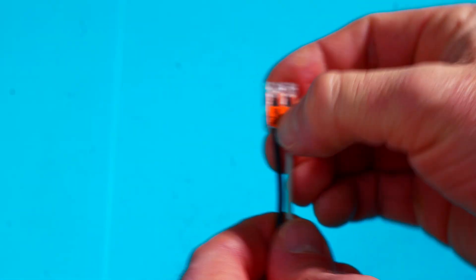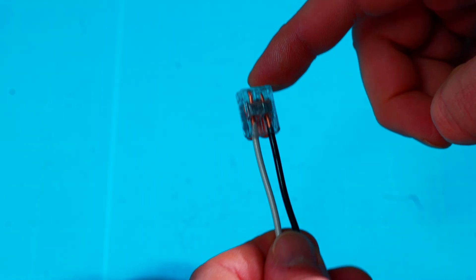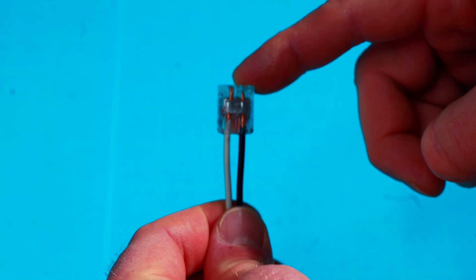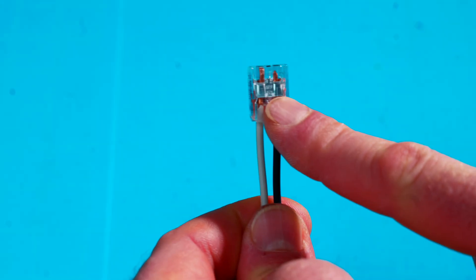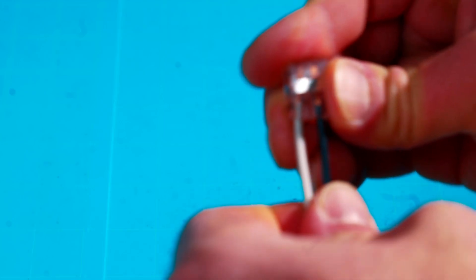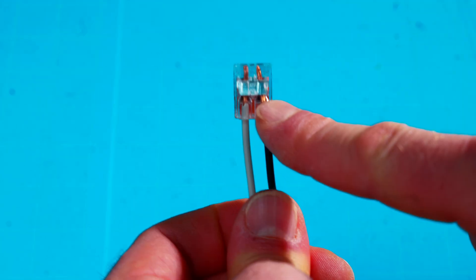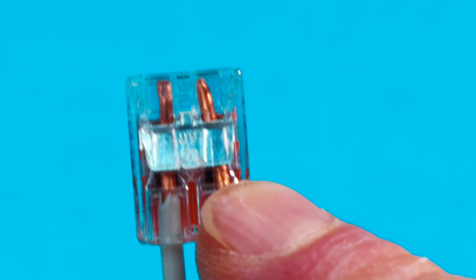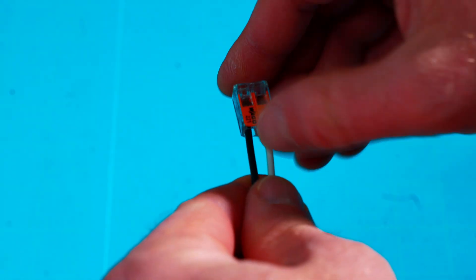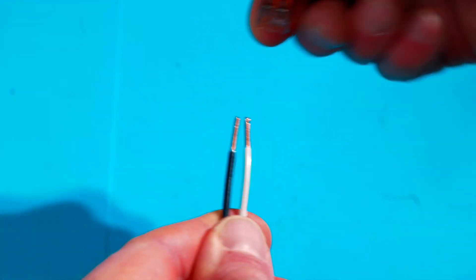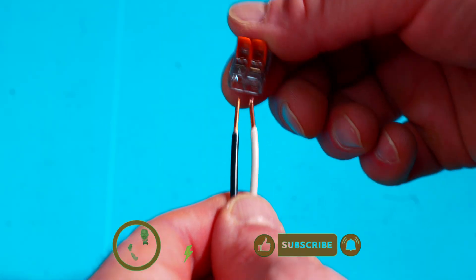Another great thing about these Wago 221s is as you can see, they are see-through. So if you're looking at the back, you can see where your wires have ended up. If you don't like the way they've landed inside your barrels or inside the connector, you can simply pop the orange levers back up and start again, and it's that quick.